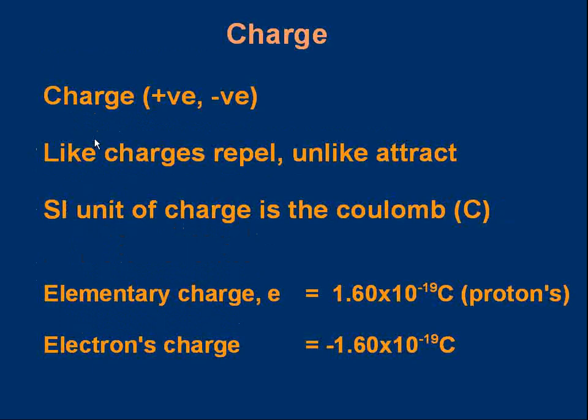A quick recap, hopefully, of some information you already know about charge. There are two sorts of charge. We call them positive and negative. An example of a positive charge is a proton. An example of a negative charge is an electron. Normally, materials can become charged by gaining or losing electrons. They're either knocked off the outside of atoms or gained by atoms.